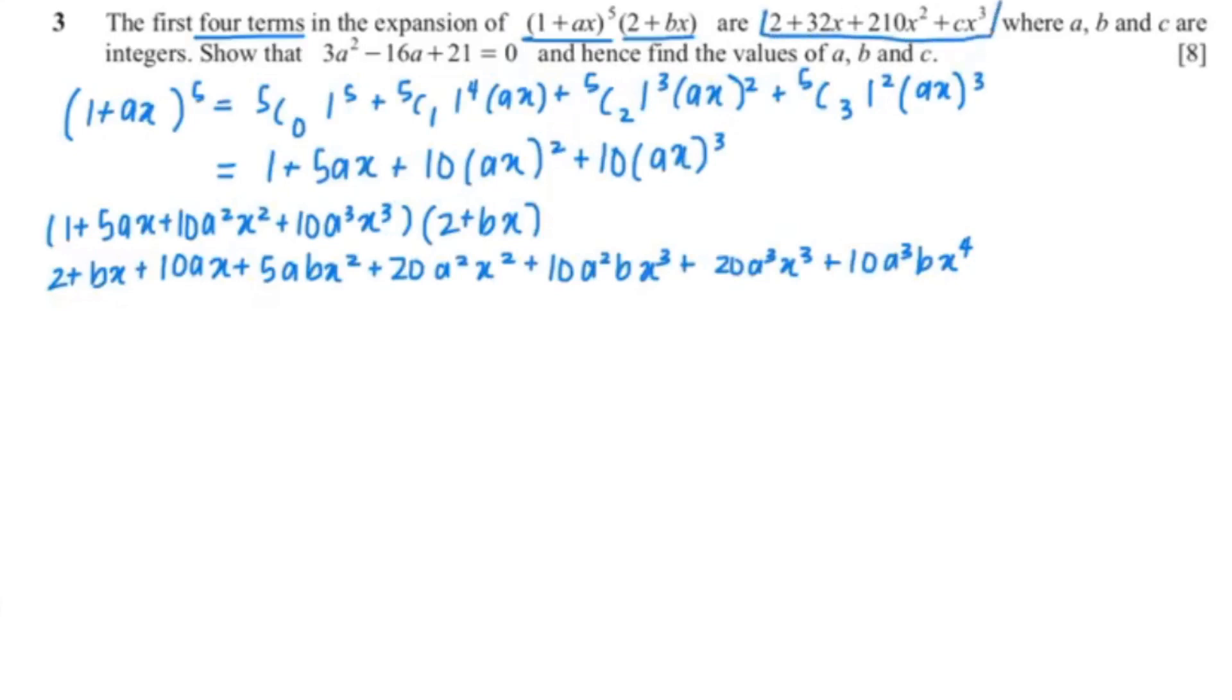So now I'm going to compare it with this equation. So let me just rewrite that equation so that's 2 plus 32x plus 210x² plus cx³. Now I'm going to use my equation and compare with this equation. So basically I'm going to solve that equation. So I have 1 plus b plus 10a equal to 32. For the x² coefficient, 5ab plus 20a² equals 210. And we have 10a²b plus 20a³ giving us c.